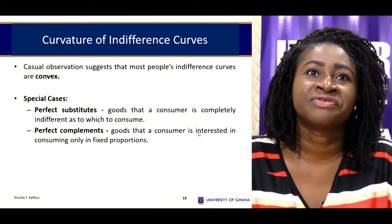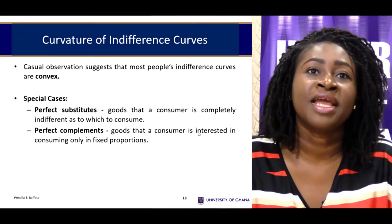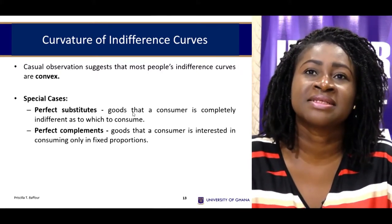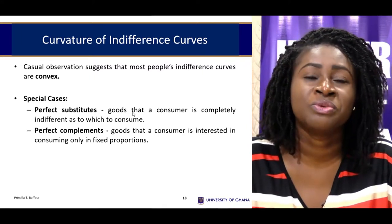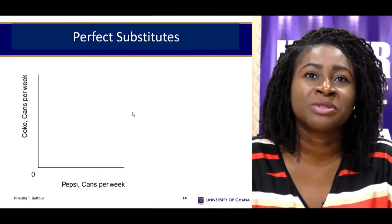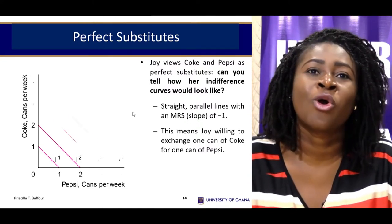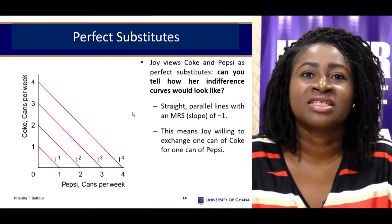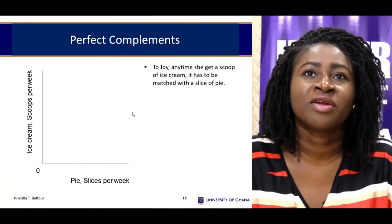Regarding the curvature of indifference curves, there are scenarios where they do not take the typical convex shape. One scenario is when you have perfect substitutes — goods that serve the same purpose but are different, such as Coke and Pepsi. When you pour Coke and Pepsi into a glass you cannot tell the difference. For perfect substitutes the consumer always picks one and does not combine them. The rate of substitution is constant at one, giving a perfect straight line, with higher indifference curves yielding higher satisfaction.